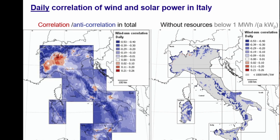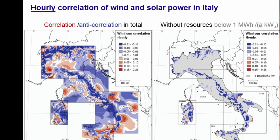This is now for the daily correlation — just before it was annual correlation. We see a similar pattern here; again, regions with below one MWh per year per kilowatt-peak are excluded, and the characteristics are about the same. Also, for the hourly correlations of wind and solar, the pattern is a bit different — there are more red areas showing positive correlation between wind and solar, which must also be considered.